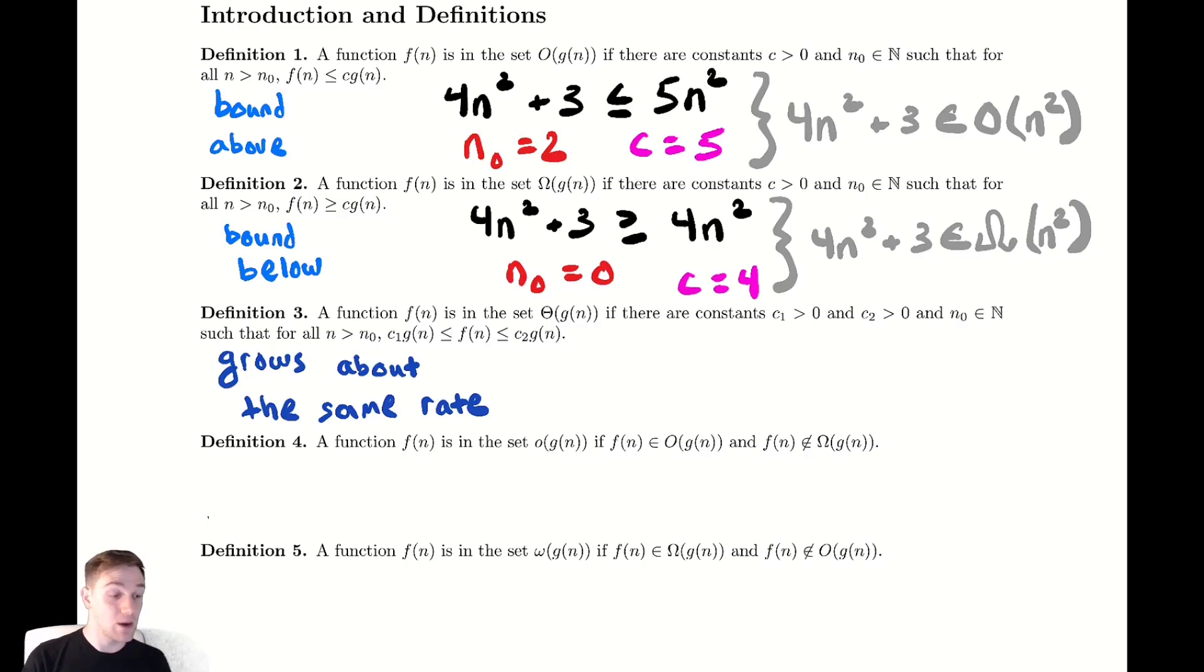We have two other definitions which can be helpful if you're trying to be lazy for notation. One is common, the other one is semi-rare, so I will mention both for completeness and so that we can use them in the future to be lazy. So the fourth definition there is little o, it is the exact same as big O, except it requires that it is not in big omega of that function. Similarly, we have a little omega which is being in big omega, but not in big O.